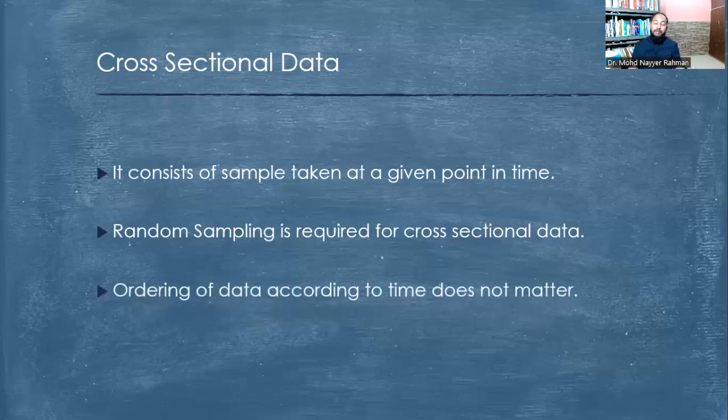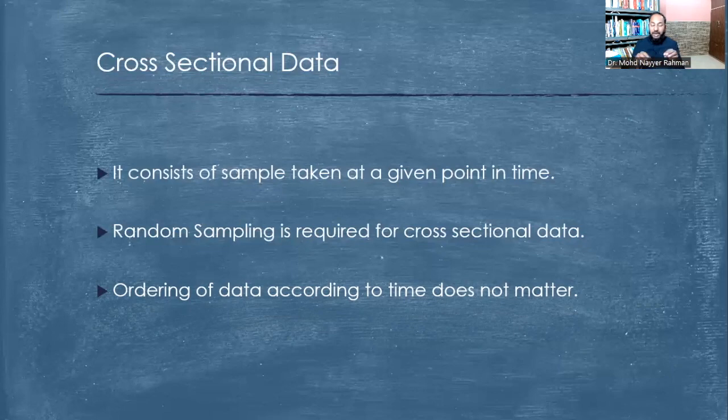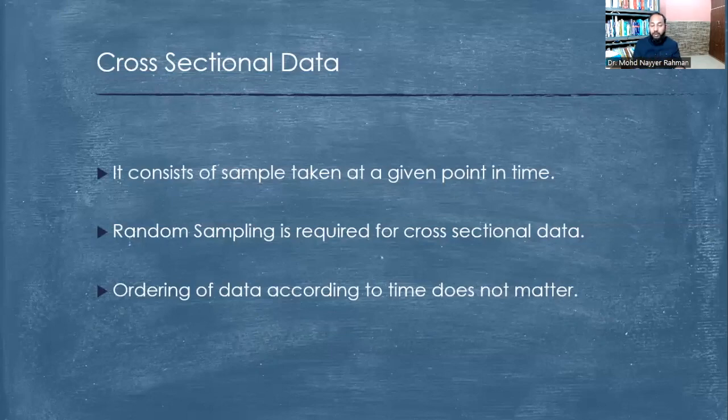Ordering of data according to time does not matter in cross-sectional data. Because it is a point in time, the time lapse within that time frame does not matter. For example, the time period can be a day, a month, or a year. So in 2021 we collected data for several people - it doesn't matter if it's January 2021 or February 2021. In a single day we collected samples of different people, and even the different time frames within that day - morning, afternoon, evening - don't have any impact on it.